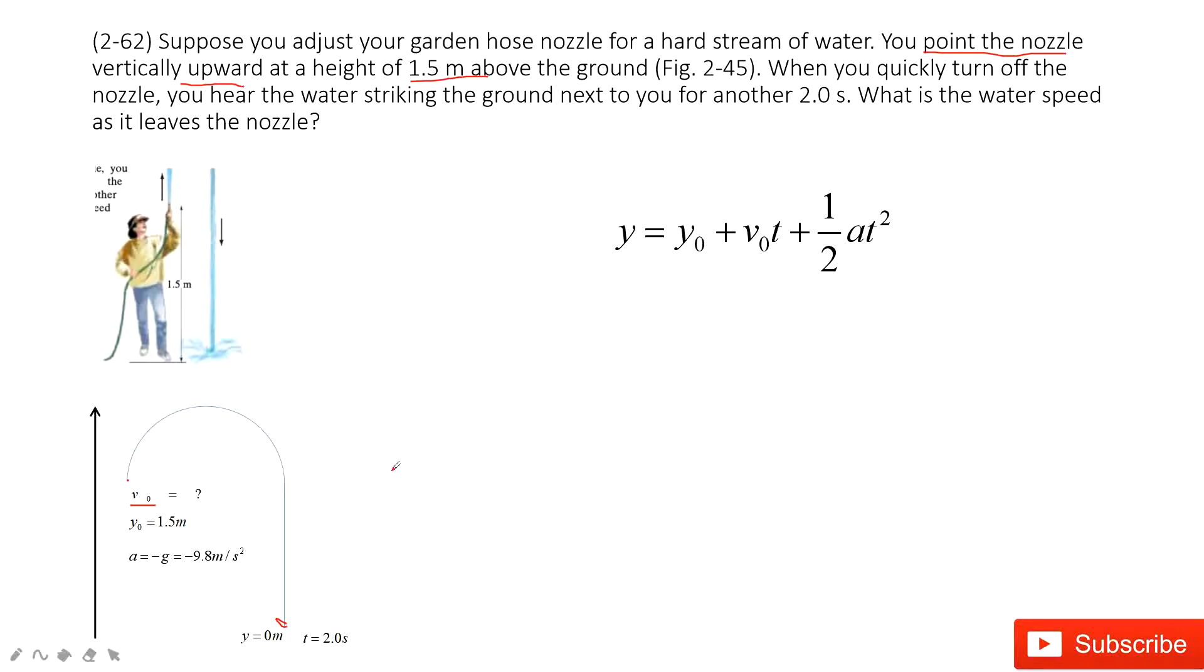We find the final position is 0. And we can see acceleration is negative g. In this equation, we input the known quantities and solve for v0. v0 equals gt divided by 2 minus y0 divided by t.